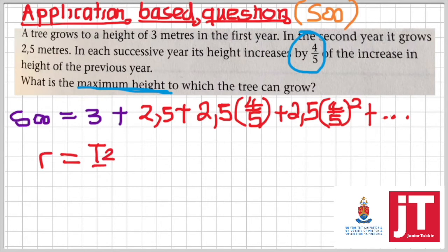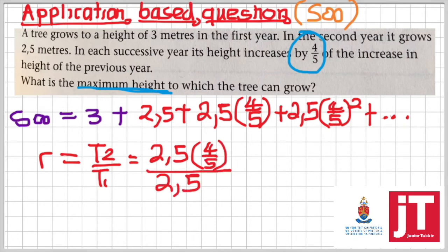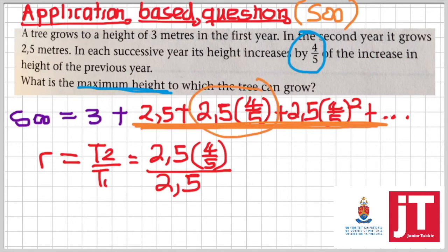Which is the same thing as 2.5 times 4 over 5 over 2.5. One might wonder immediately that we're only focusing on that part where I'm underlining in orange. That's the part that generates a series to infinity. Hence, our second term within that series in red is that one. Then our first term is obviously the 2.5.